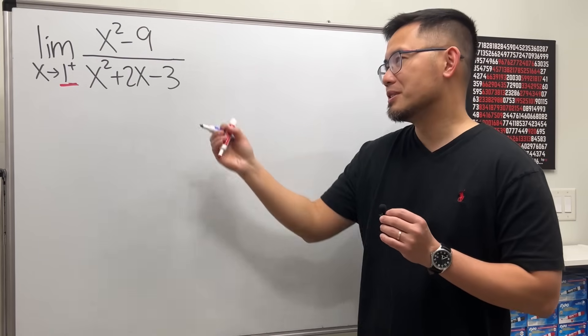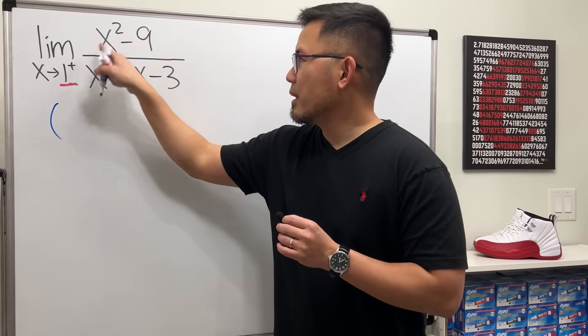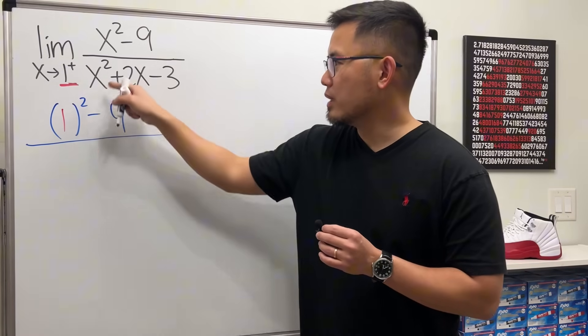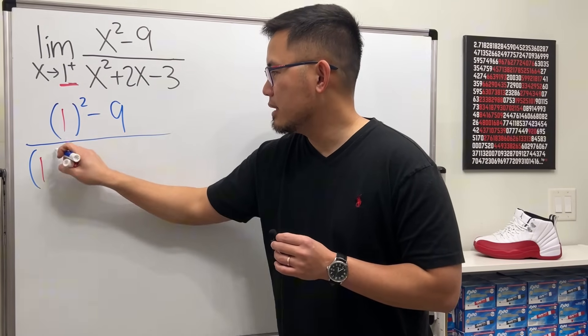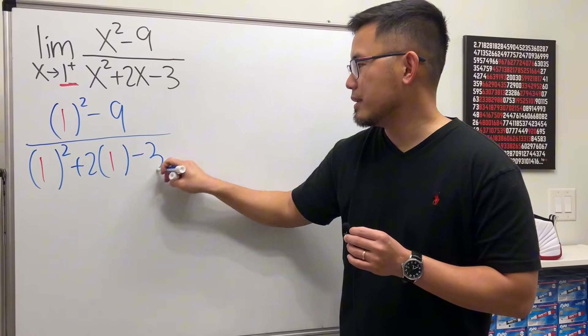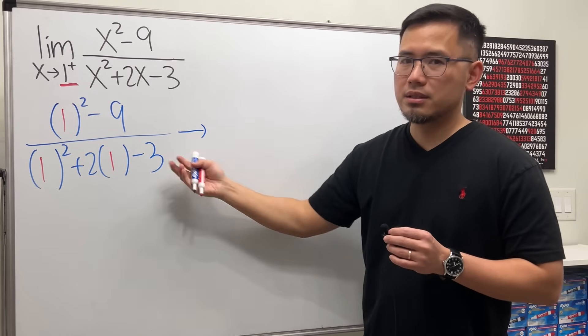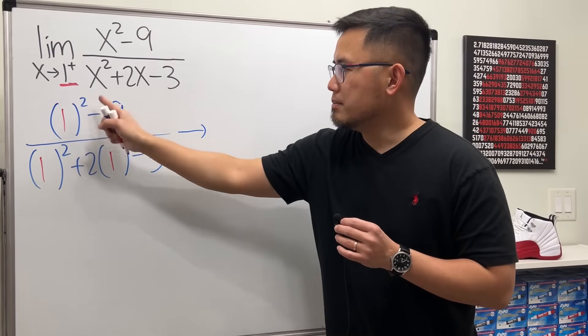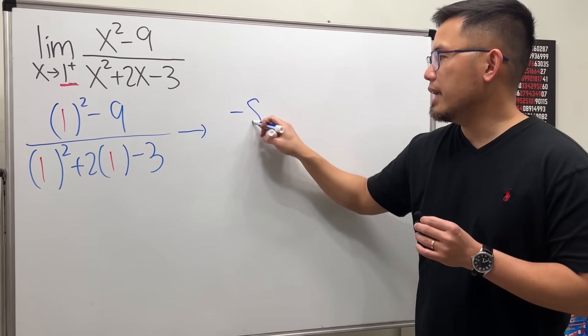So let's have a look. Plugging 1 into the x, so we have 1 squared and then minus 9, over plugging 1 we get 1 squared and then plus 2 times 1 and then minus 3. Let me draw an arrow because this means we approach. Yeah, 1 squared is 1 minus 9, we get negative 8.